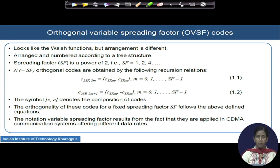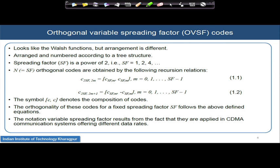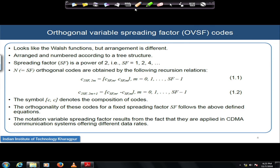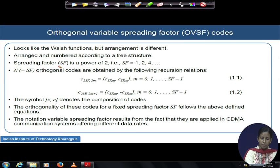Today our discussion is on Orthogonal Variable Spreading Factor (OVSF) codes. If you look at the structure of OVSF codes, you will see a lot of similarity with Walsh-Hadamard codes, but the arrangement is a little different. A tree structure is formed for the OVSF codes based on the spreading factor, which is usually a power of 2 — so you get spreading factors of 1, 2, 4, 8, and so on.